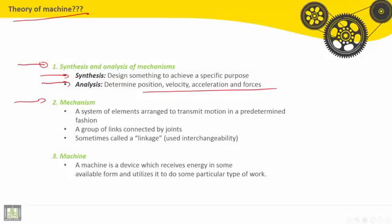What is a mechanism? It is a system of elements arranged to transmit motion in a predetermined fashion. It is also a group of links connected by joints. Sometimes it is called linkage used interchangeably.